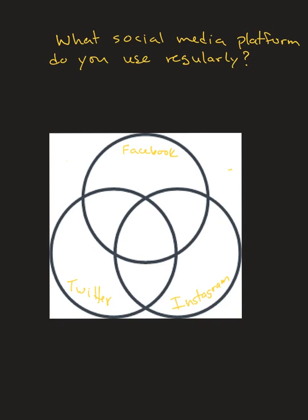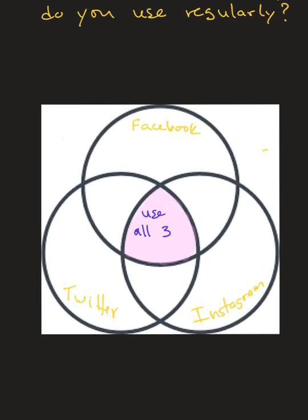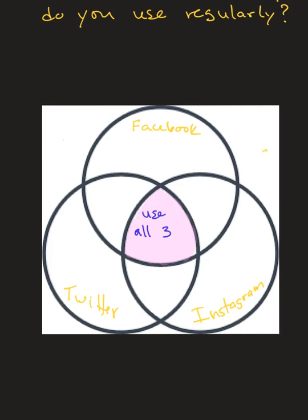Let me do a little shading. For example, let's shade this portion right here — this is where all three circles overlap. How would you describe the people that would be in this area? These would be the people that use all three platforms.